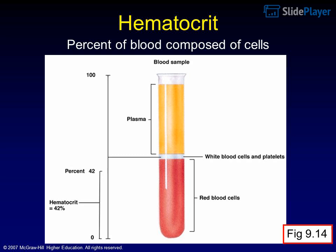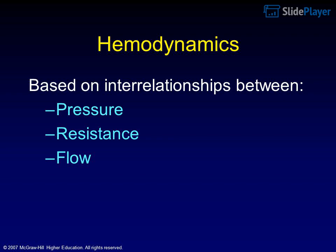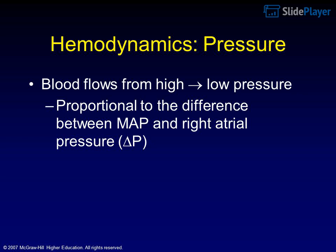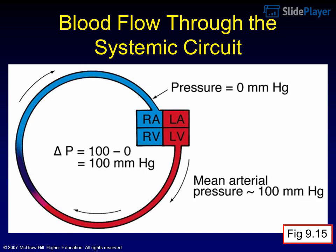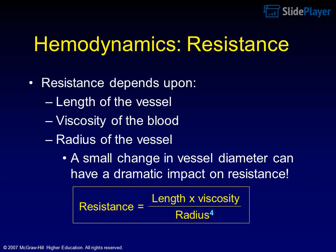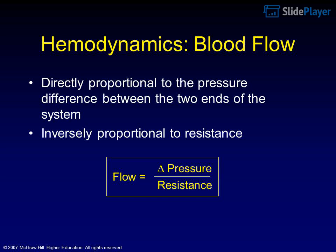Hemodynamics is based on the interrelationship between pressure and resistance. Blood flows from high to low pressure, proportional to the difference between mean arterial pressure (MAP) and right atrial pressure. Blood flow through the systemic circuit is shown in Figure 9.15. Resistance depends upon the length of the vessel, the viscosity of the blood, and the radius of the vessel — a small change in vessel diameter can have a dramatic impact on resistance. Resistance equals length times viscosity divided by radius to the fourth power. Blood flow is directly proportional to the pressure difference and inversely proportional to resistance: Flow = Pressure / Resistance.